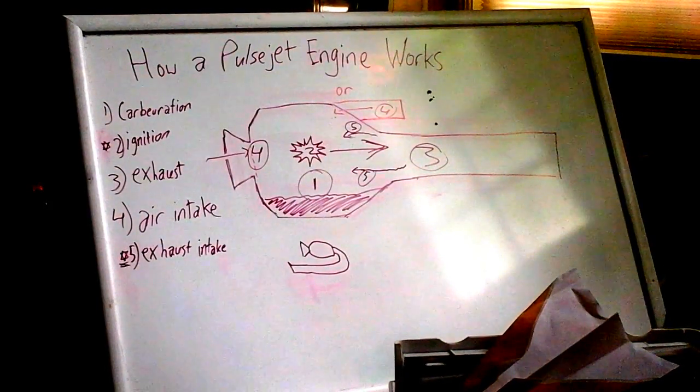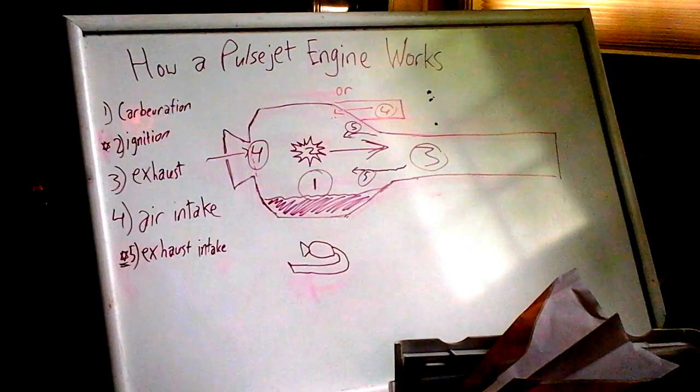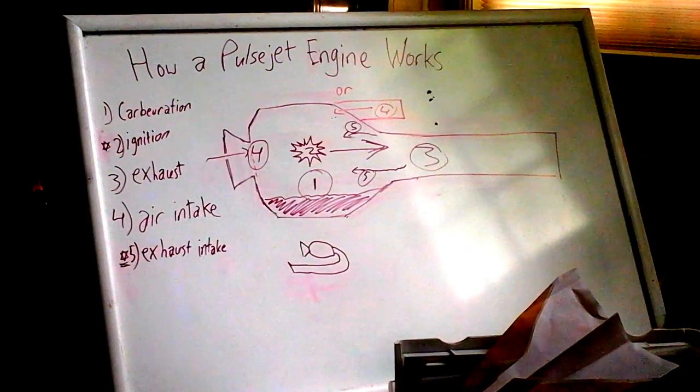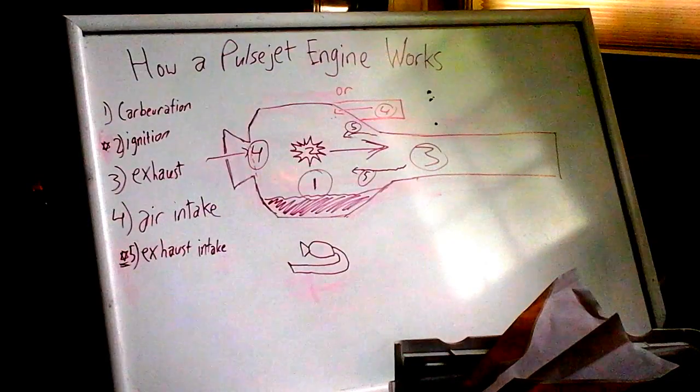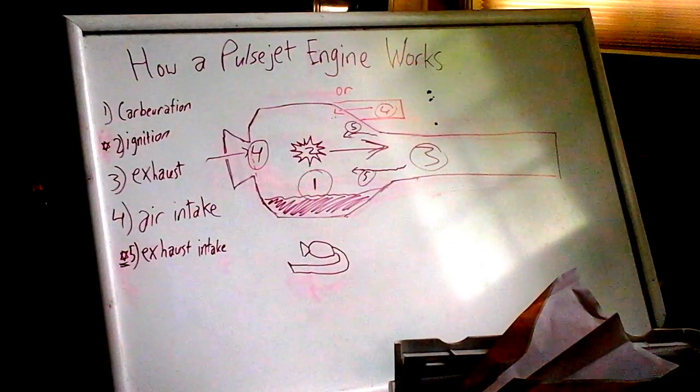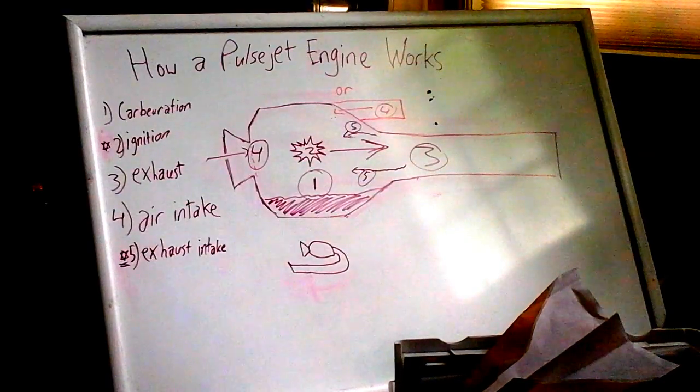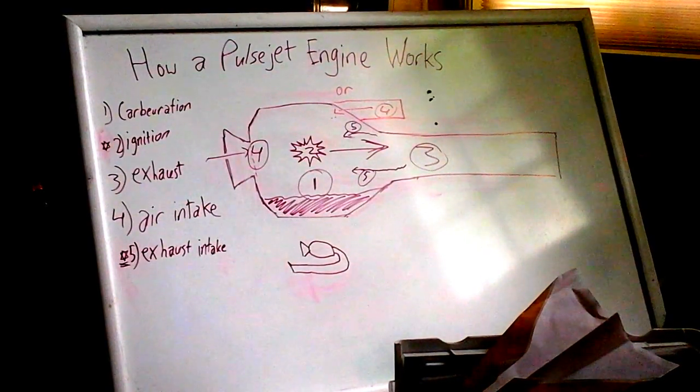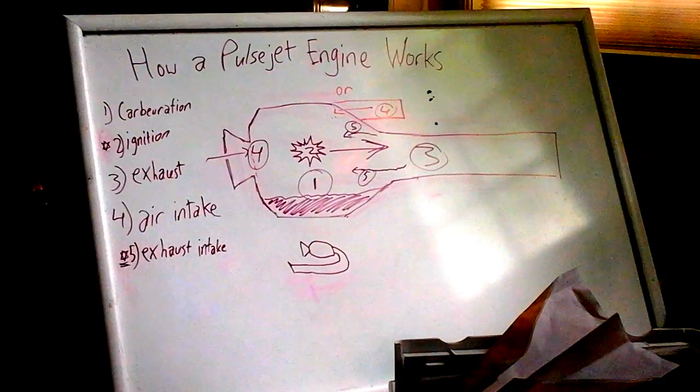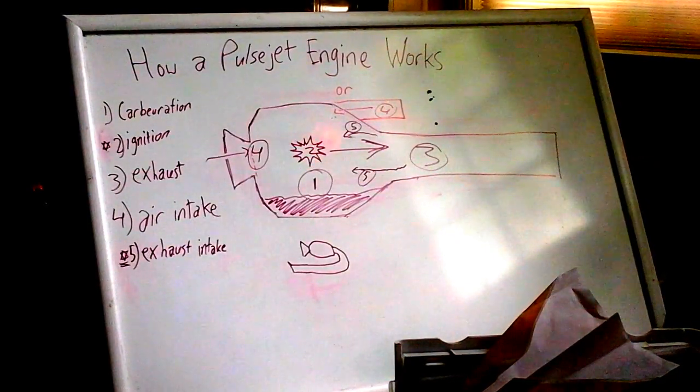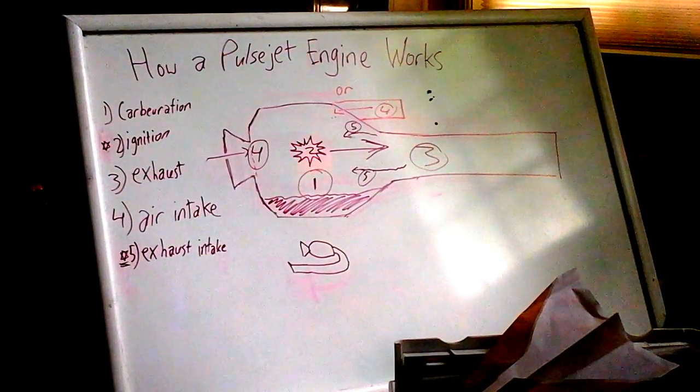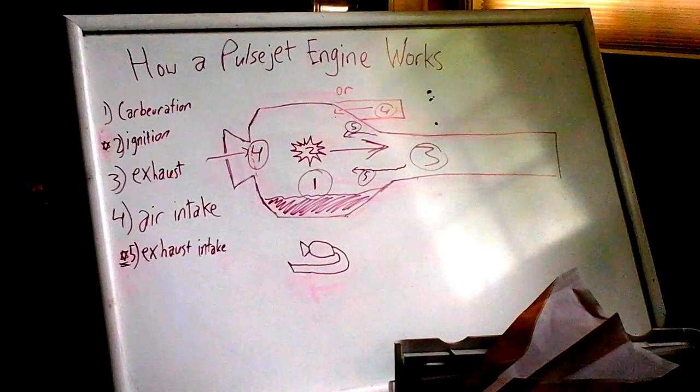So this is how a valveless pulsejet engine works. I hope you guys can see that. I'm using a nerf gun for this. The first step right here, the fuel and air mix - this is carburation or carburization, whatever way it's spelled or whatever way you say it. The second part is ignition, so once the fuel and air have mixed, you get your ignition.